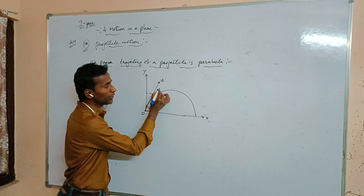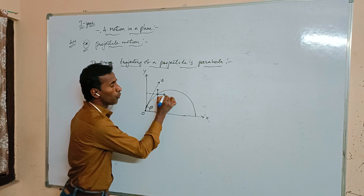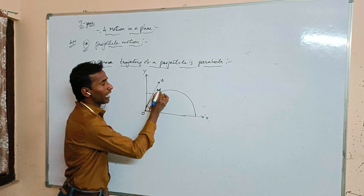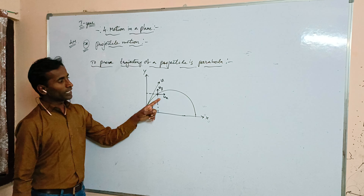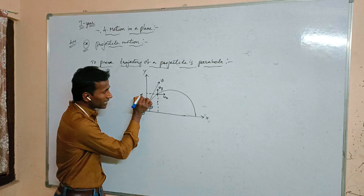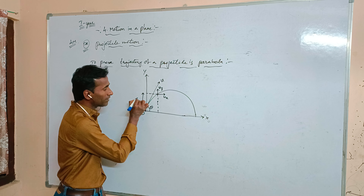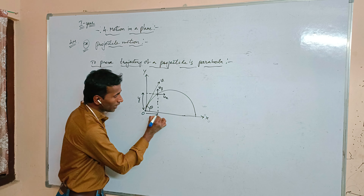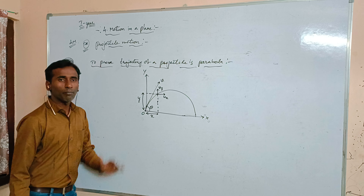This initial velocity u can be resolved into two rectangular components — one is the horizontal component, that is ux, and the vertical component, that is uy. The distance travelled along the vertical is y and along the horizontal is x.